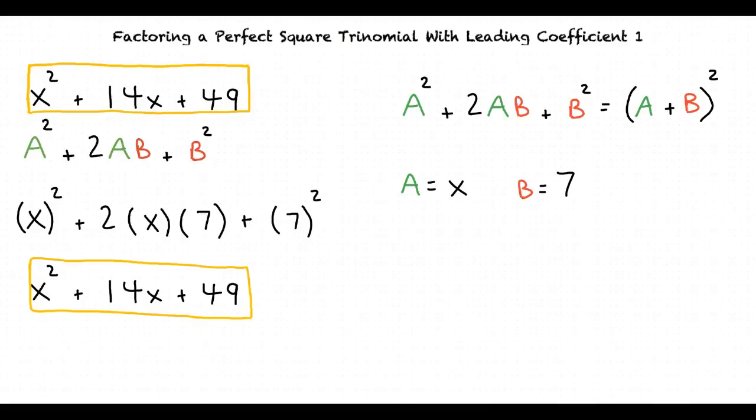Now that we have successfully identified our a and b values, we can substitute those values into the second part of our formula to find our answer. The result, after substituting in our values, is the quantity x plus 7 squared.